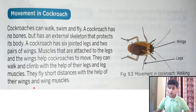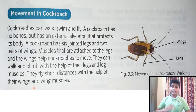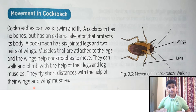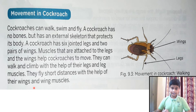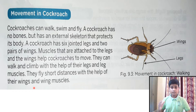The cockroach has three types of movements. These three movements are walk, swim, and fly. The cockroach is mainly walking. In a rare case, the cockroach is swimming, and in a very short time, they fly.